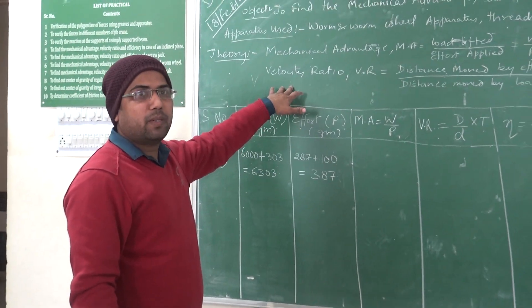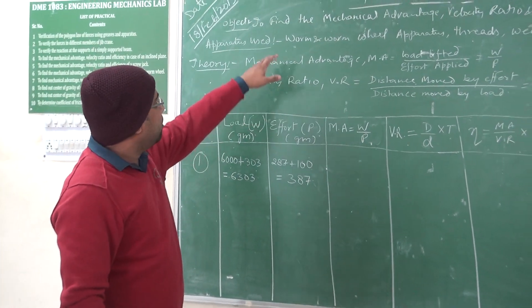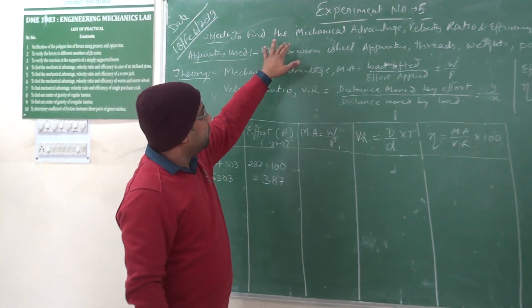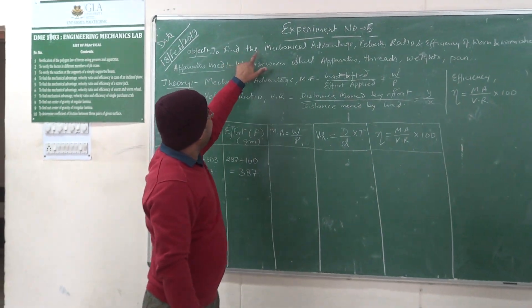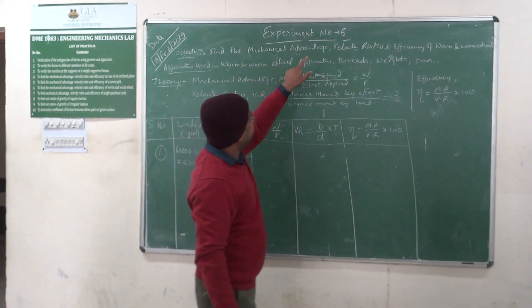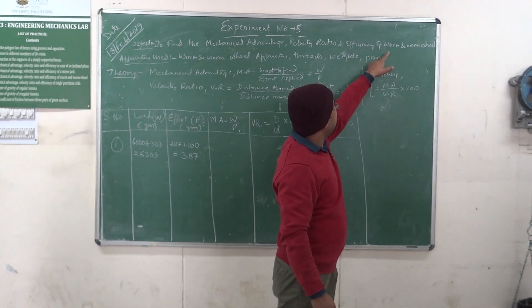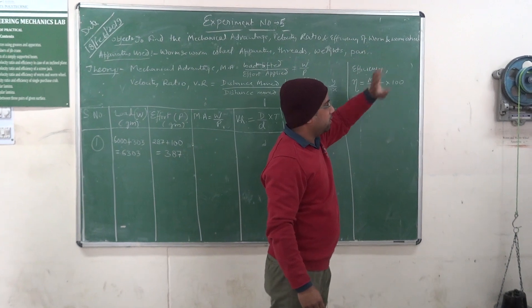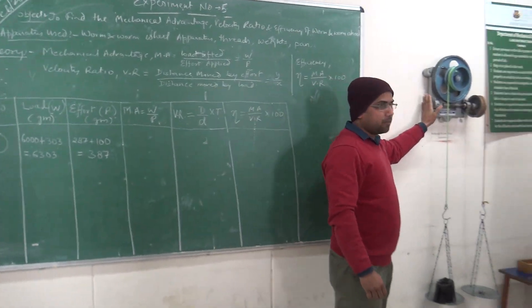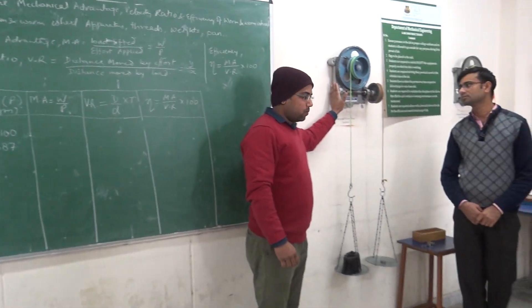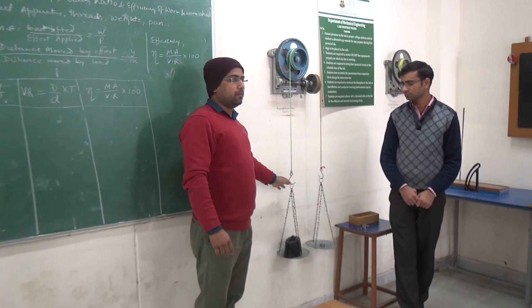Welcome to our experiment. This is experiment number 5 and the object of today's experiment is to find the mechanical advantage, velocity ratio and efficiency of worm and worm wheel. This is our worm and worm wheel apparatus which is going to be used for today's experiment.